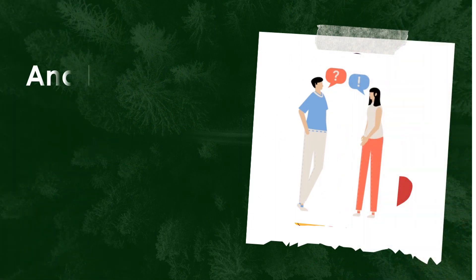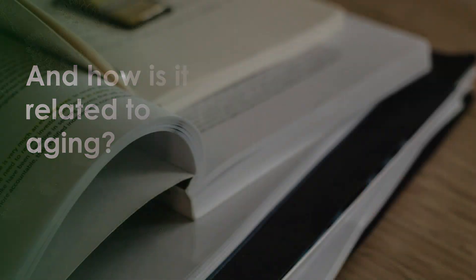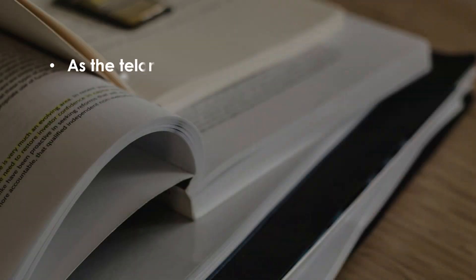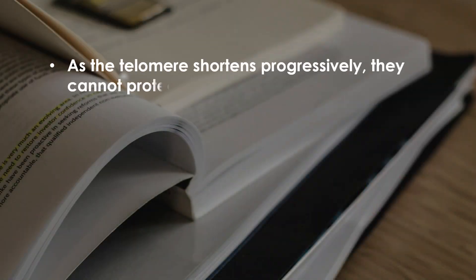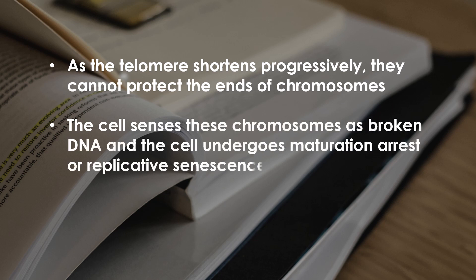How is replicative senescence related to aging? The telomeres shorten progressively with each cell division, so they cannot protect the ends of the chromosome. The cell senses these chromosomes as broken DNA, and the cell undergoes maturation arrest or replicative senescence.